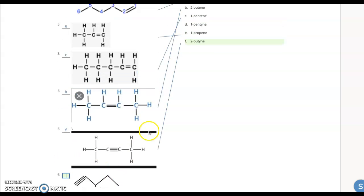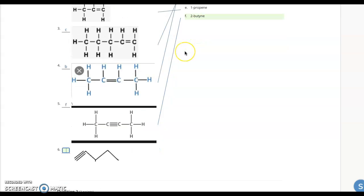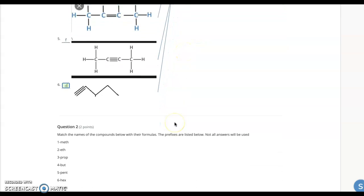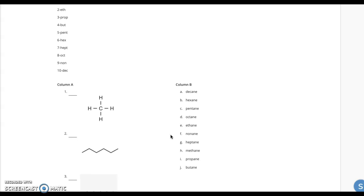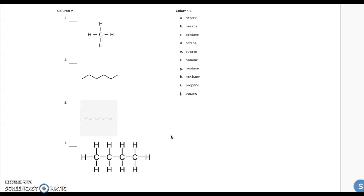And lastly, here I have five carbons. So it's pent. A triple bond means Y-N-E. So it's one pentyne. And here we just have the same idea, but it's all single bonded ones. So one carbon is meth. All single bonds is A-N-E. So it's methane. That's letter H.